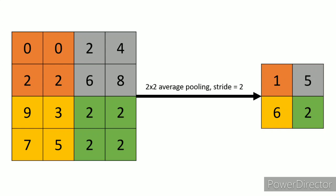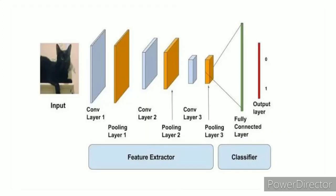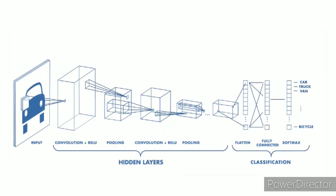Fully connected layer — FC layer. This is basically the last layer of the network. It is a non-linear combination of the high-level features in the second-to-last layer, which is basically the output of the convolutional layer.